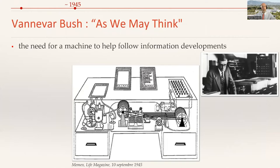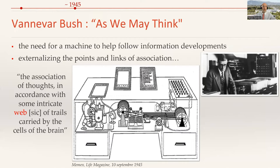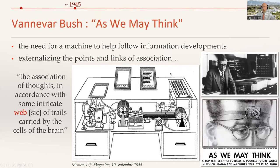In 1945, Vannevar Bush wrote an article called As We May Think. In this article, he identified the need for a machine to help follow information development — a machine that he called the memex, for memory extension. In this machine, we would be able to externalize the points and links of association, quoting "the association of thoughts in accordance with the intricate web of trails carried by the cells of the brain." Vannevar even envisioned that one day we would all be carrying cameras and generating so many pictures that we would need a machine to organize them all.